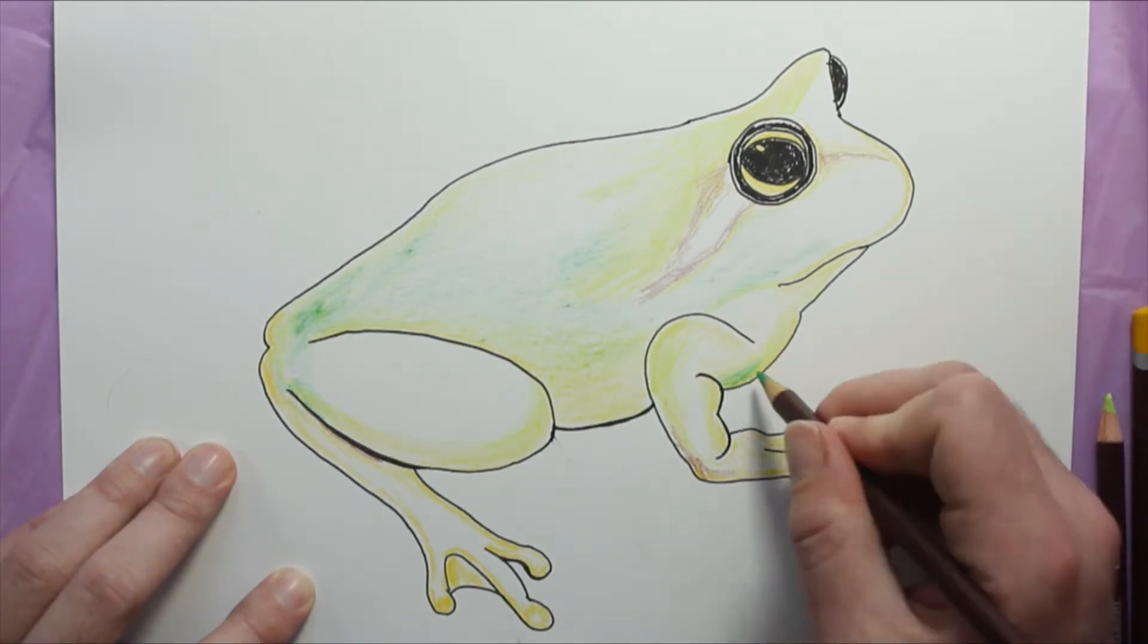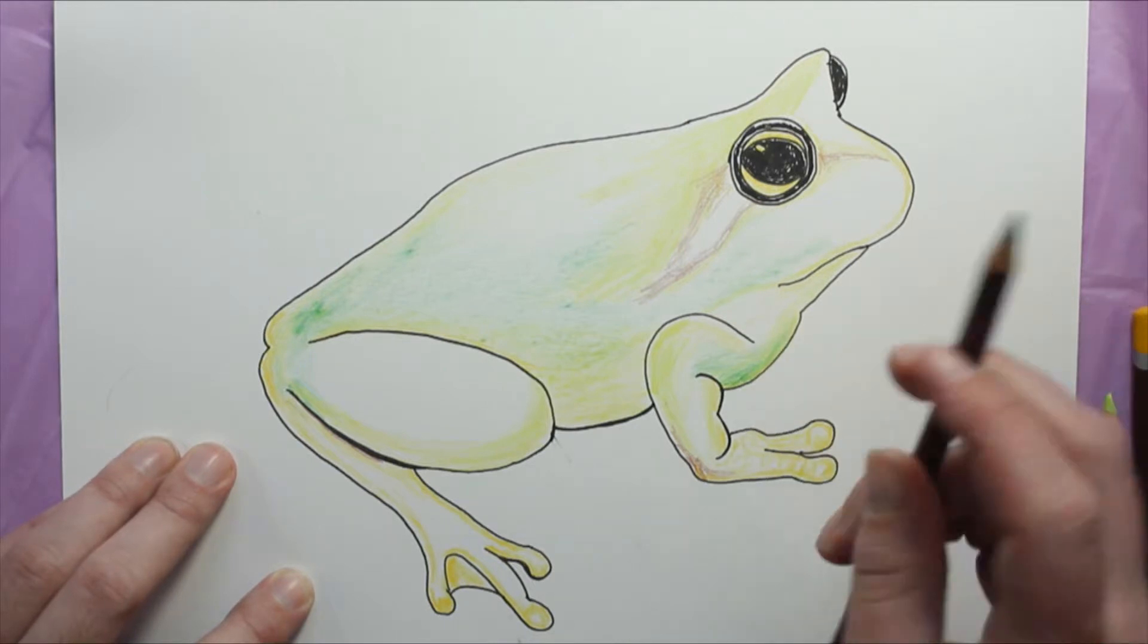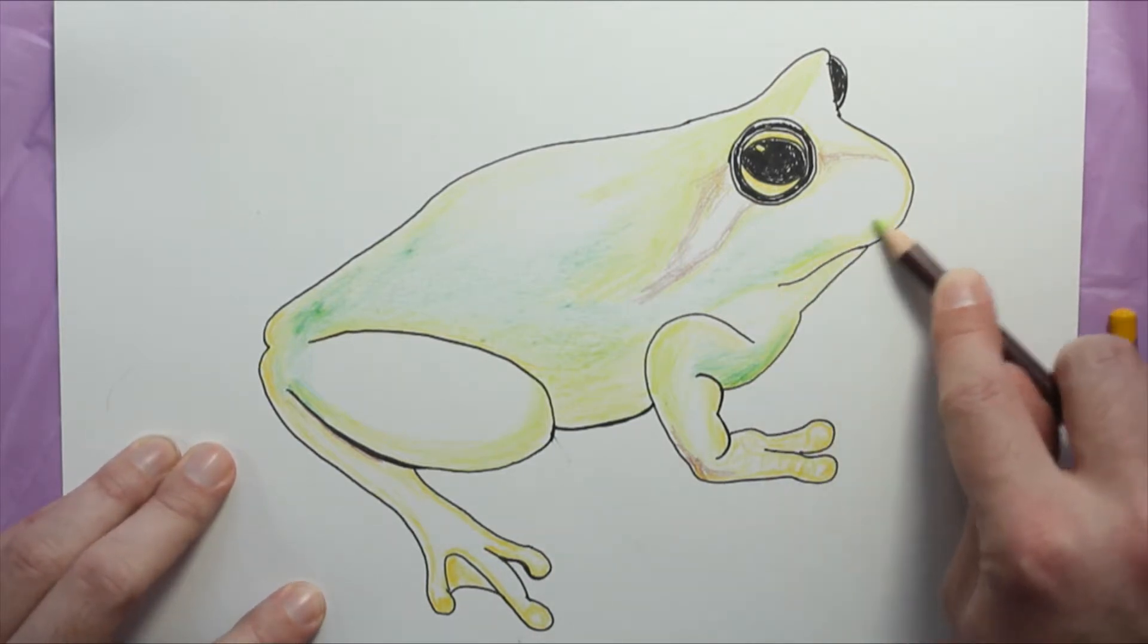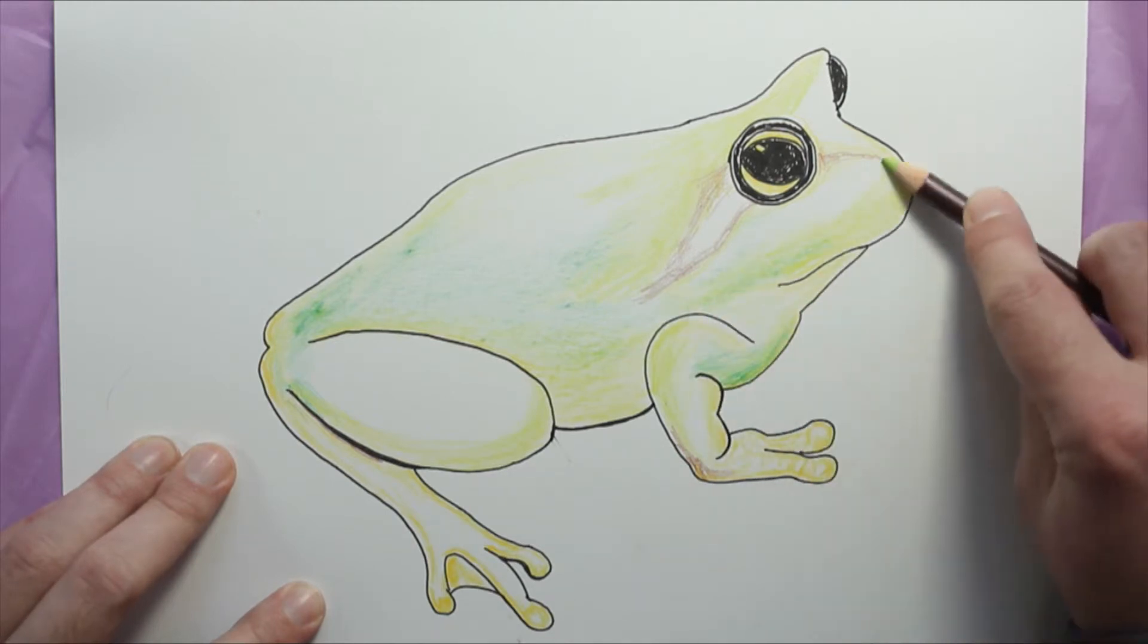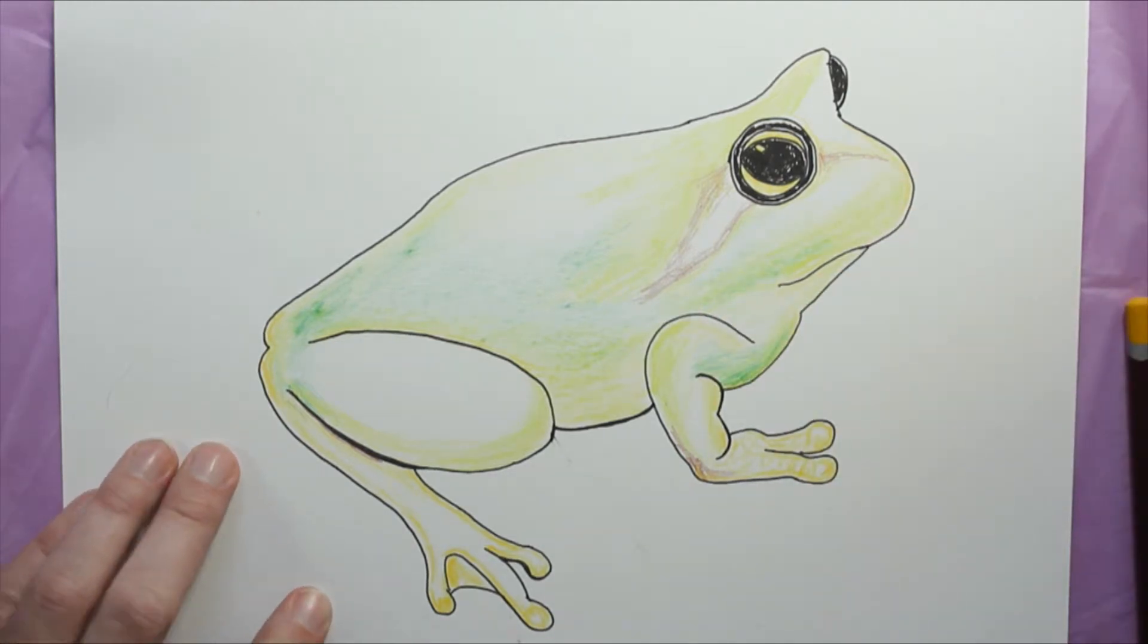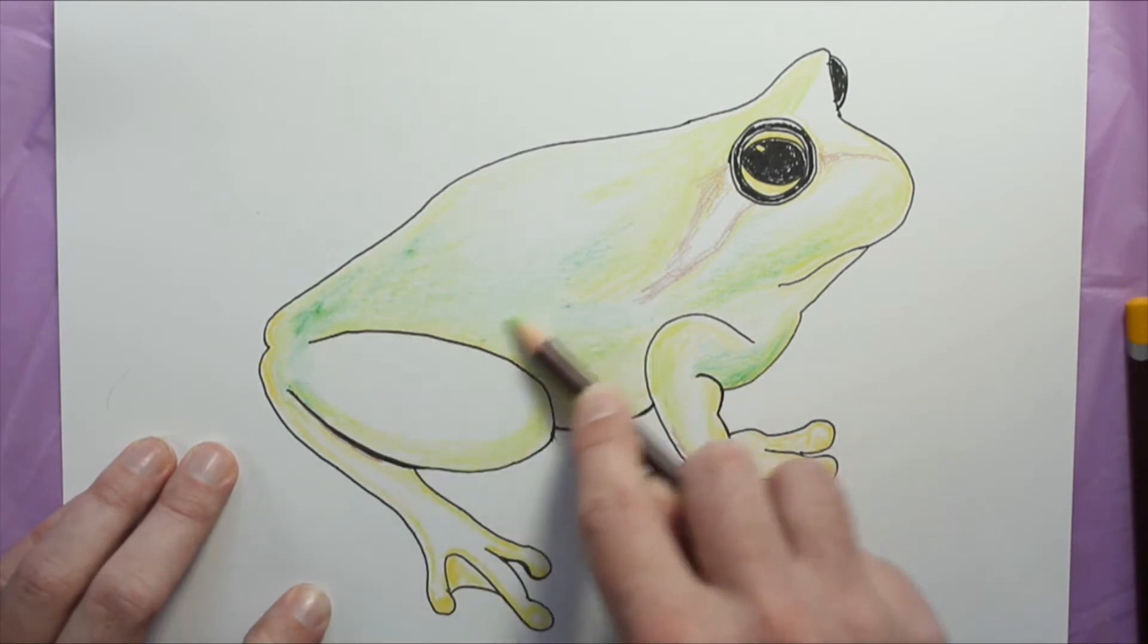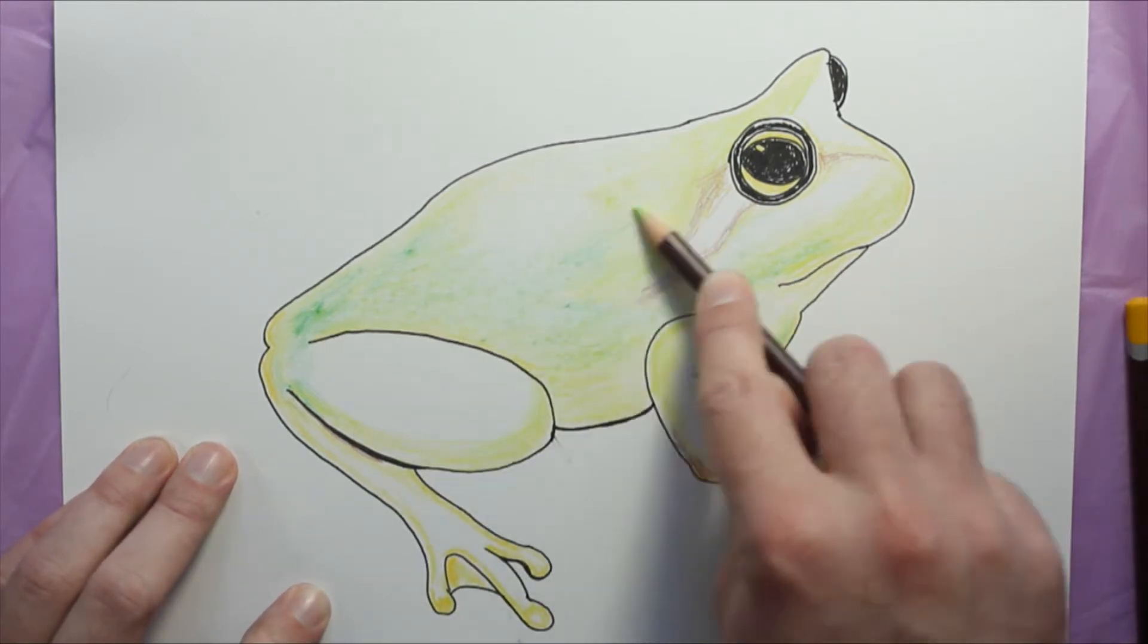And so if I left it yellow, that would be the color of a poisonous dart frog. Poisonous dart frogs are generally yellow, but I'm gonna put some green in here, some kind of yellowish green.